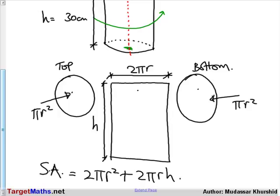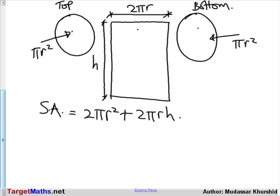And now, we substitute the measurements that we were given for the original cylinder. So, h is equal to 30 cm, r is equal to 2 cm. Therefore, surface area equals 2 times, take π as 3.14.